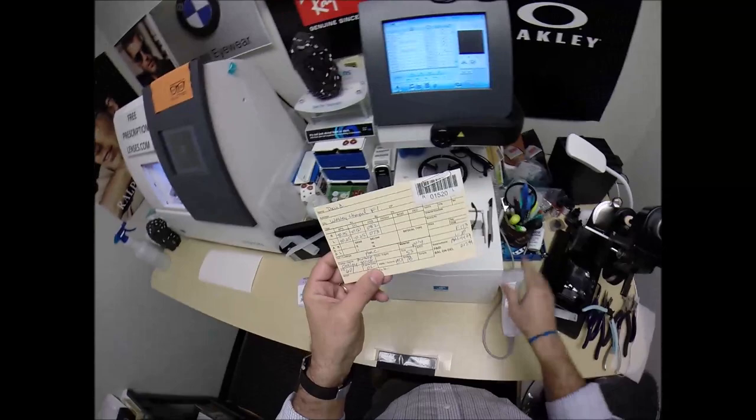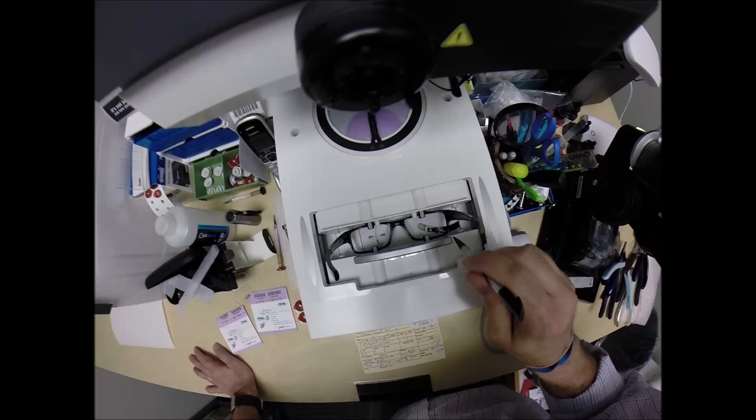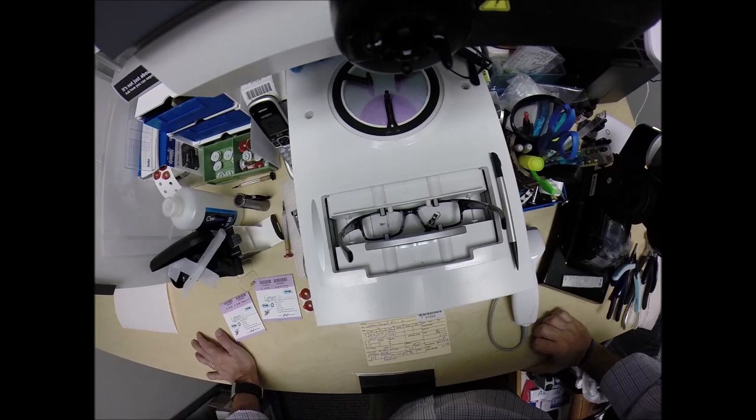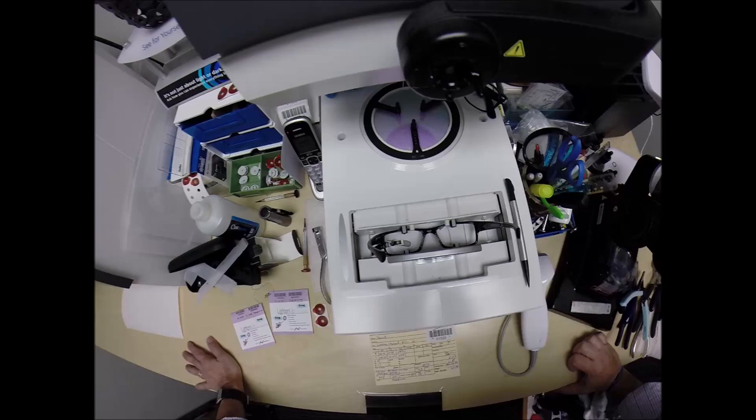So I'm going to put the frame into the tracing element of my blocker. I'm going to program the shape into the computer, your secret agent 1520, because years from now should you ever need new lenses this will be programmed into the computer and I can send you just lenses only. Because this little stylus is going to go around and trace the inside bevel of the right side of the frame before doing the same thing on the left.